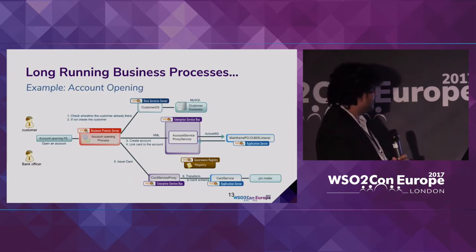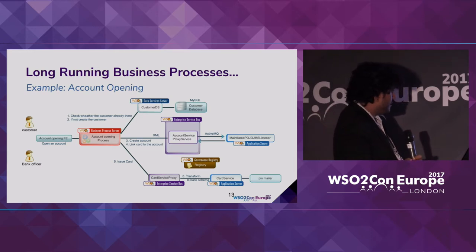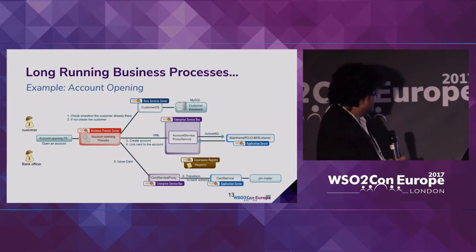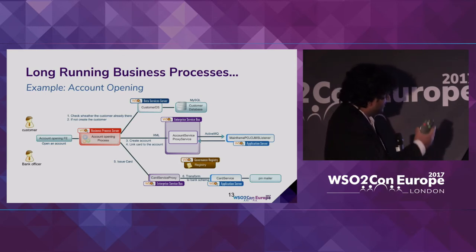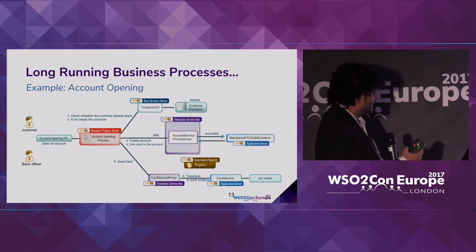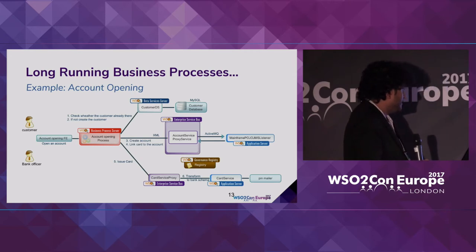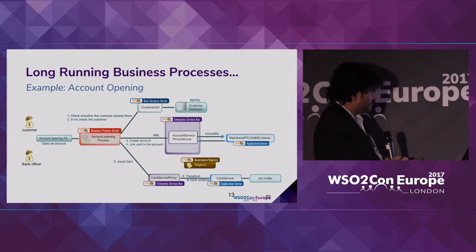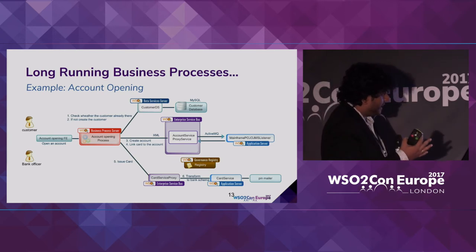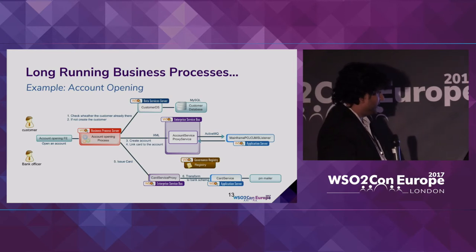This is a simple example of how you would use a business process. The business process does the orchestration — for example, here it's an account opening workflow, which talks to different multiple endpoints to get the work done. For account opening, you may talk to a data service to create the database entries for the account, and an ESB to do the other account opening logic, and another service to do card issuing and so on. So basically what the business process does is talk with these multiple endpoints and make a composite application.